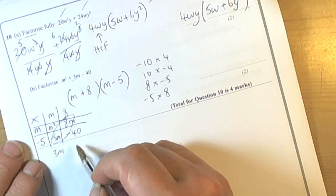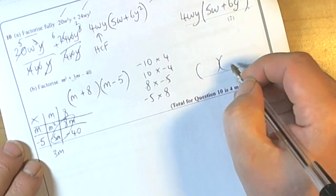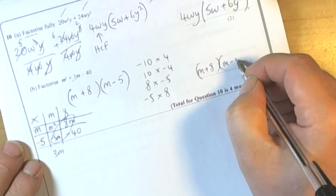So we've got the m squared, we've got the 3m, and we've got the negative 40, so it works. So our answer will be m plus 8, m take away 5.